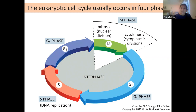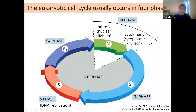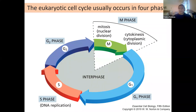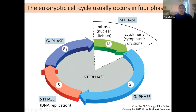Some cells are not meant to replicate and divide. They are in what we call a senescent state or just doing their job — these are typically in a G0 phase and are not part of the cell cycle. Some cells in G0 can never re-enter cell cycle, while others, given the right cues and environment, can re-enter at the G1 phase.